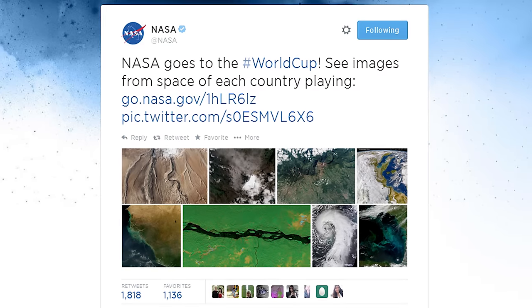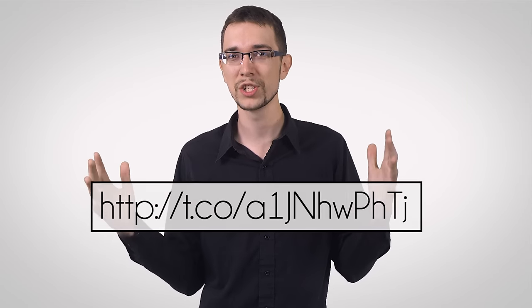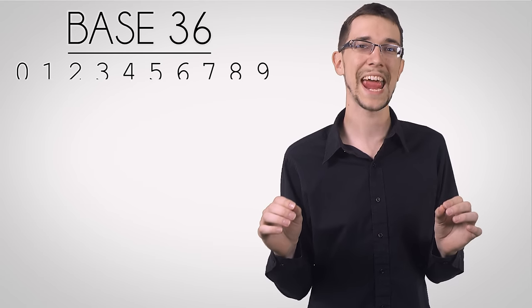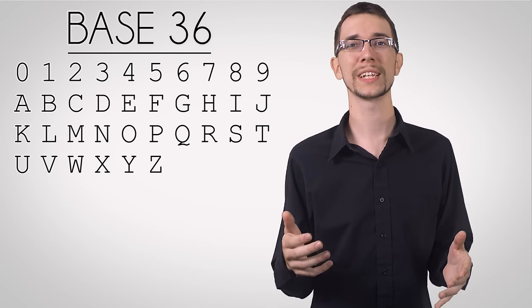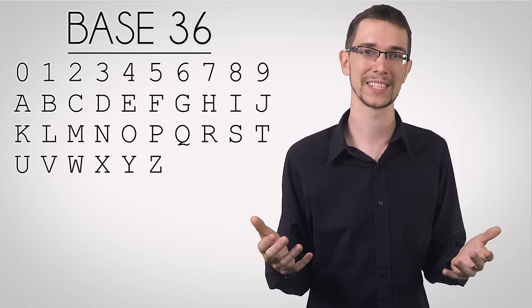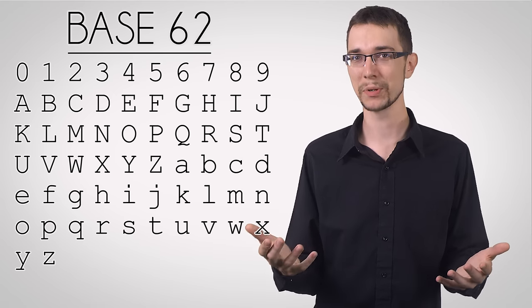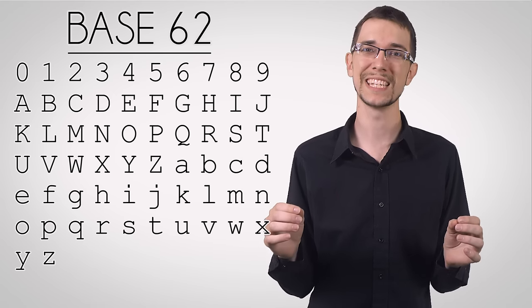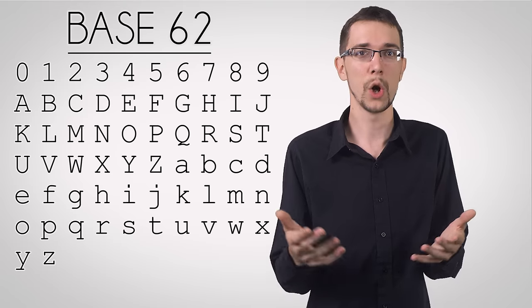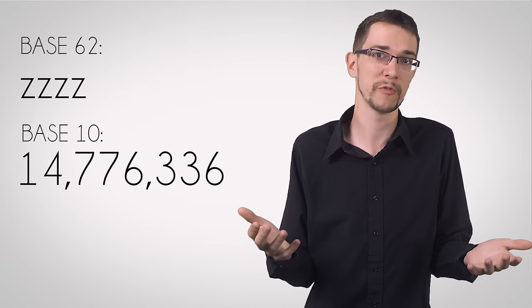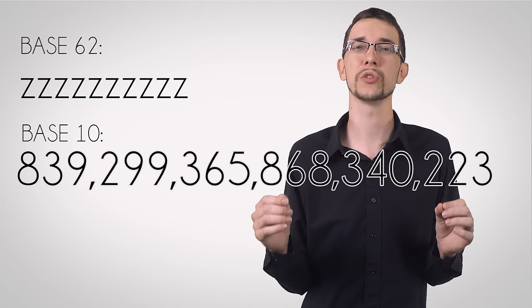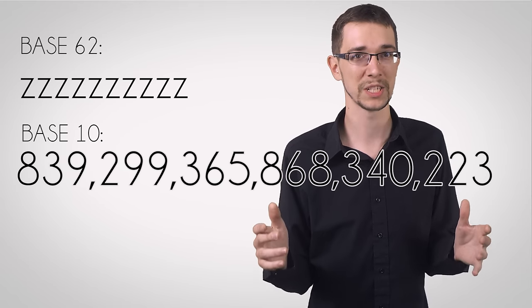You know those URL shorteners that you see on Twitter and elsewhere? Have you ever wondered how they work? All those jumbled characters really just represent a very large number. By using numerals and every letter of the alphabet, you can get all the way up to base 36. Using lowercase and uppercase letters gives you base 62. And with that, you can get all the way up to 14 million with only 4 digits. With just 10 digits, you can get up to 839 quadrillion possible values. That's a lot of shortened URLs.